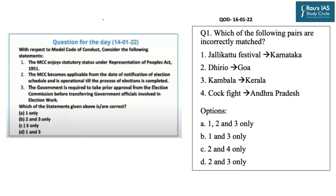Now for the question of the day: the question from the last DNS dated 14th January 2022 was related to the Model Code of Conduct — you had to find the correct statement from three options. The correct answer is option C — statement three only — because statements one and two are incorrect. MCC does not enjoy statutory status. Today's question from the DNS is related to the festivals discussed — you have to find the incorrect options from the given pairs.